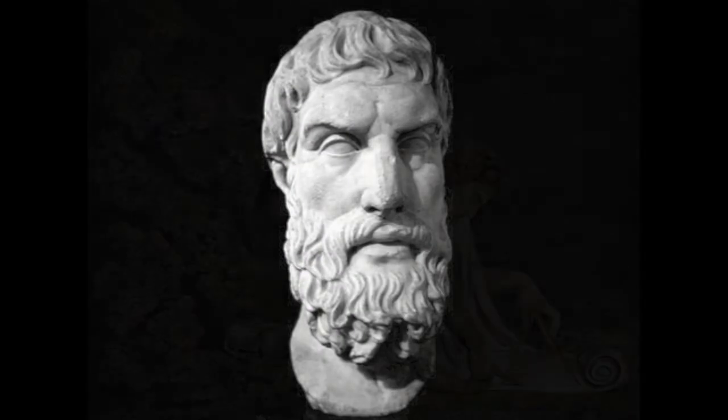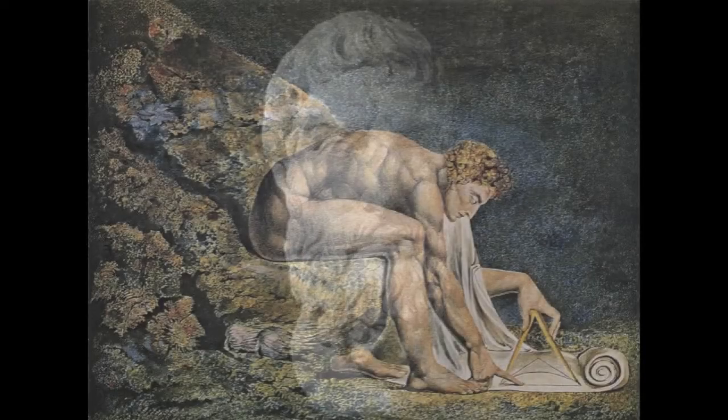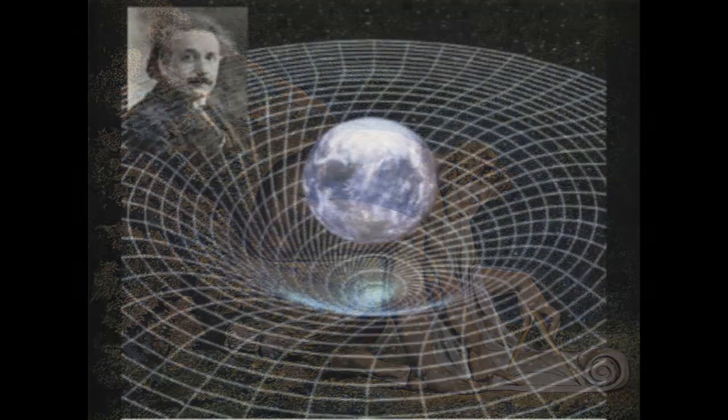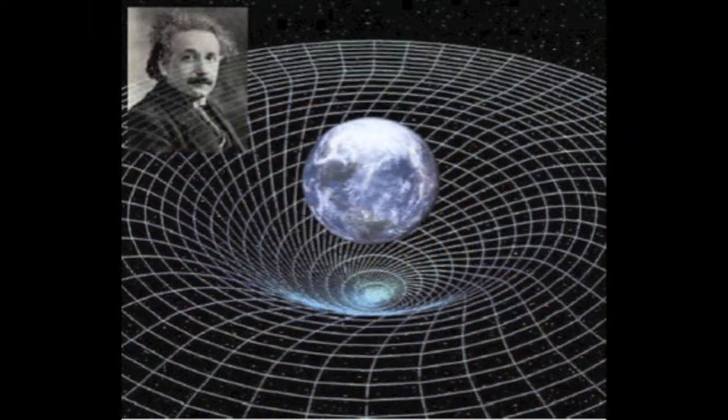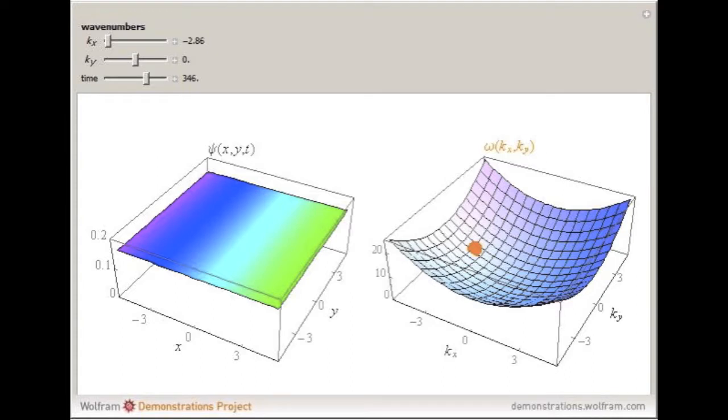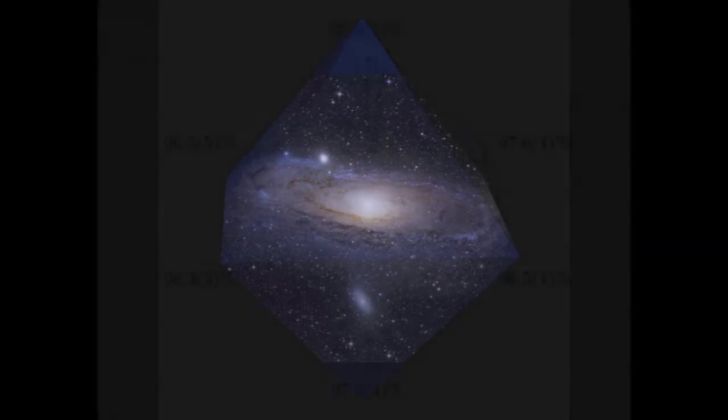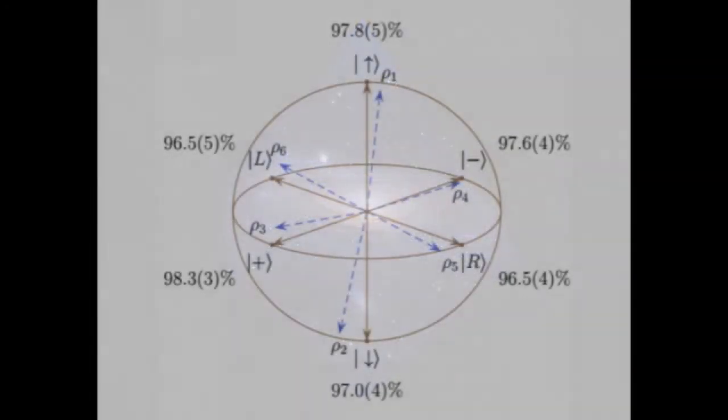He and the Pole Copernicus have hitherto been the greatest and most successful opponents of ocular evidence. For while Copernicus has persuaded us to believe, contrary to all the senses, that the Earth does not stand fast,